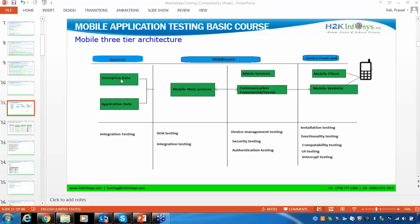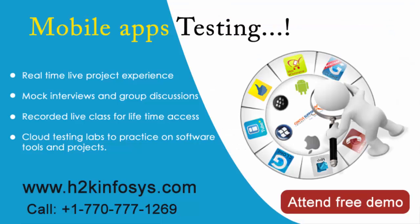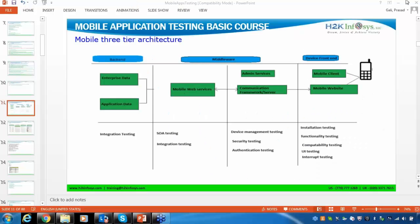For any IoT technology, a mobile application is developed based on three layers: the back-end database, the middle tier where all common functionalities are stored as web services, and the device front-end. As part of web services, you will do a lot of web service testing. Finally, mobile app testing itself comes into the device front-end picture.